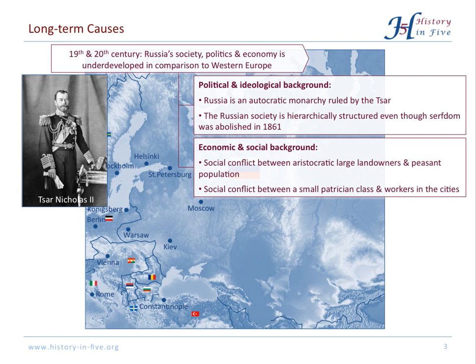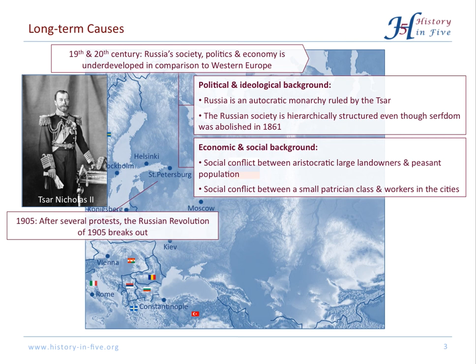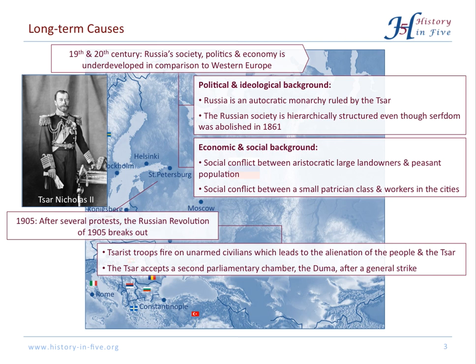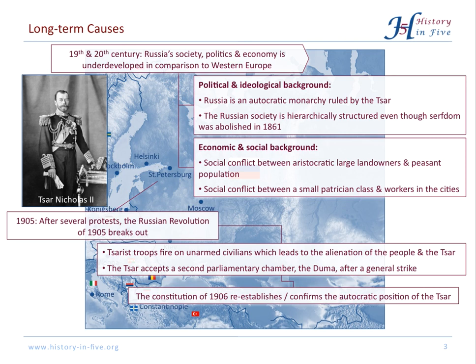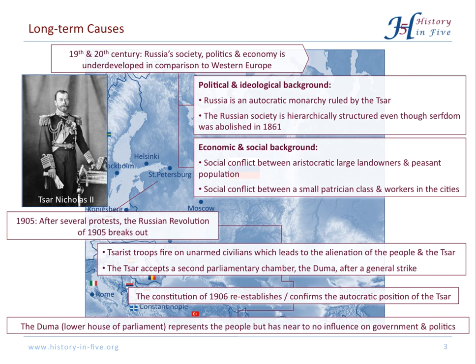There was a revolution before, in 1905. The Tsar let his troops fire on unarmed civilians, which of course led to an alienation of the people from the Tsar. However, after a general strike, the Tsar was forced to accept a second parliamentary chamber, the Duma. But a year later, the Tsar re-established his autocratic rule by a new constitution. That means the people were represented by the Duma, the parliament, but this parliament had near to no influence on government and politics.